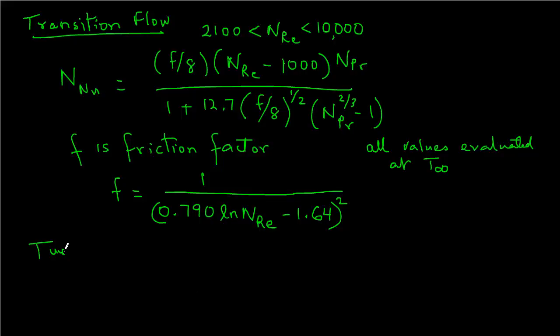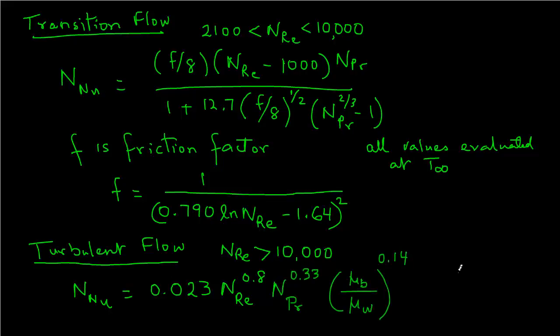The third case is turbulent flow in a pipe. In this case, the Reynolds number is greater than 10,000. The formula is Nusselt number equals 0.023 × Reynolds number raised to power 0.8 × Prandtl number raised to power 0.33 × (μB/μW) raised to power 0.14.